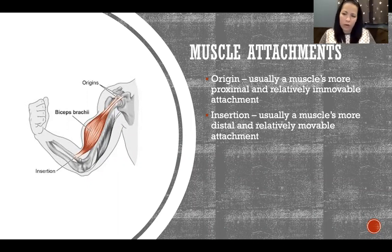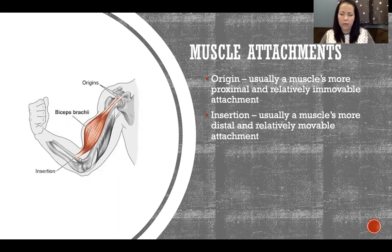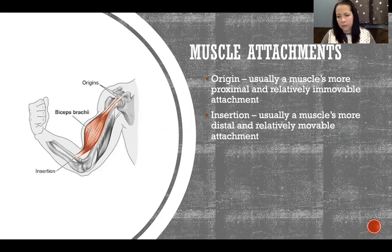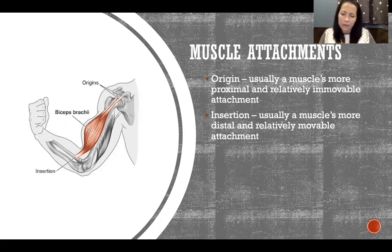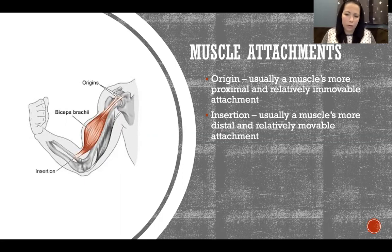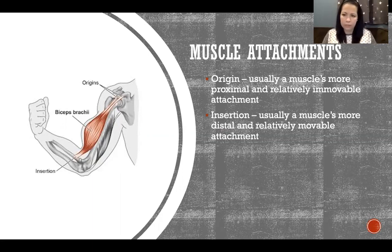Classically, we define the origin as usually the more proximal and relatively immovable attachment — the more stable attachment that is usually more proximal. The insertion is usually the more distal or relatively movable, less stable attachment. That said, this is not always true; sometimes it is exactly the opposite.